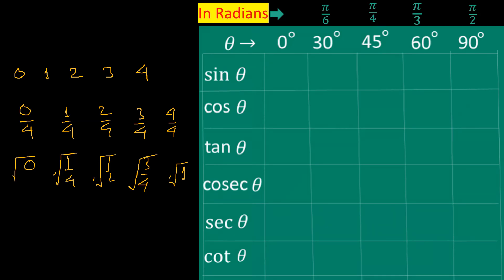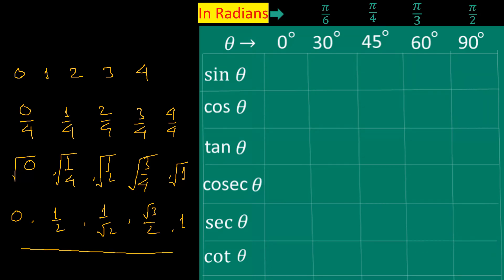Now we take the square root of all these numbers. Square root of 0 is 0, square root of 1 by 4 is half, square root of half is 1 by root 2, square root of 3 by 4 is root 3 by 2, and square root of 1 is 1. These are the values for sin θ where θ is 0°, 30°, 45°, 60°, and 90° respectively.